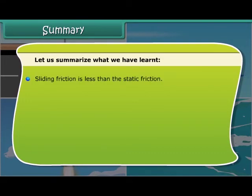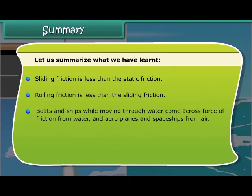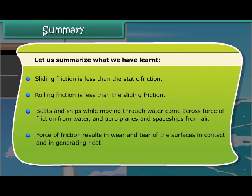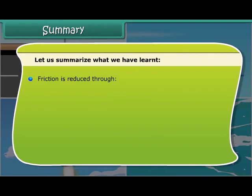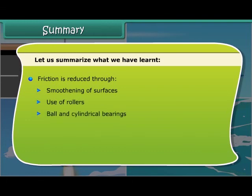In summary: sliding friction is less than static friction, and rolling friction is less than sliding friction. Boats and ships moving through water encounter friction from water, while aeroplanes and spaceships encounter friction from air. The force of friction results in wear and tear of surfaces in contact and in generating heat. Friction is reduced through smoothening of surfaces, use of rollers, ball and cylindrical bearings, lubrication of parts in motion, and streamlined shape of vehicles.